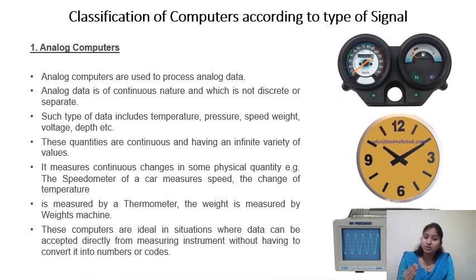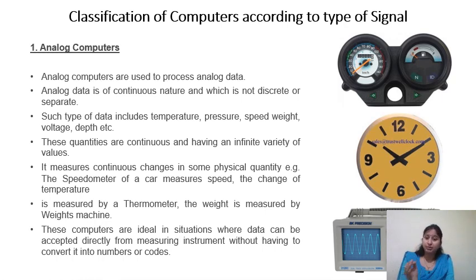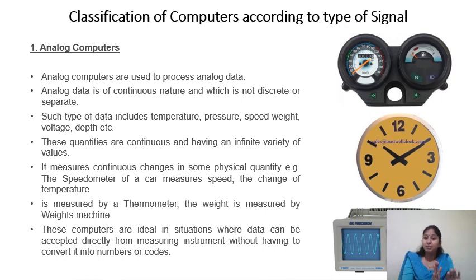The name 'analog' is given because the values calculated or measured are not static — they are always varying. You can see the speedometer of your bike: you cannot have the exact same value at any point in time because as the speed varies, the speedometer values also vary. Analog computers process analog data, which is always continuous in nature — not discrete or separate.